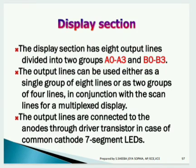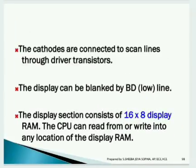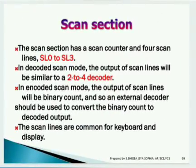The display section has eight output lines: A0 to A3 and B0 to B3, totaling eight output lines. It displays output on seven-segment LEDs. The cathodes are connected to scan lines through device drivers, and the display can be blanked using the BD (blank display) line. The scan section has four lines SL0 to SL3 with a scan counter, and is a common section shared by both keyboard and display.